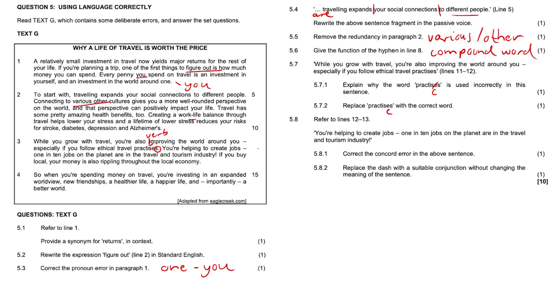5.8: Refer to lines 12 to 13: 'You're helping to create jobs - 1 in 10 jobs on the planet are in the travel and tourism industry.' 5.8.1: Correct the concord error in the above sentence. '1 in 10 jobs on the planet are' - it shouldn't be 'are', it should be 'is'. The subject there not agreeing with the verb.